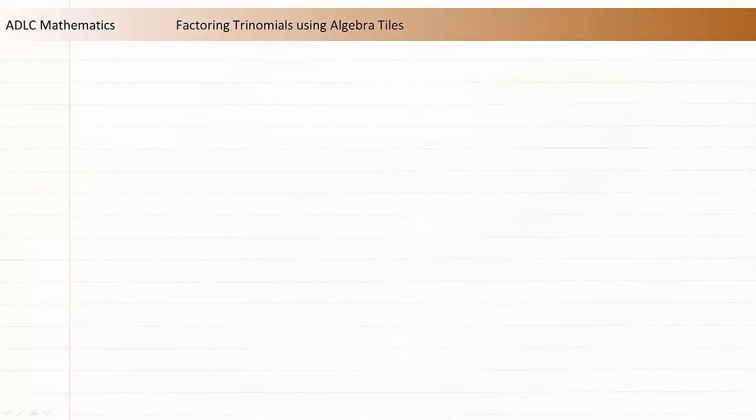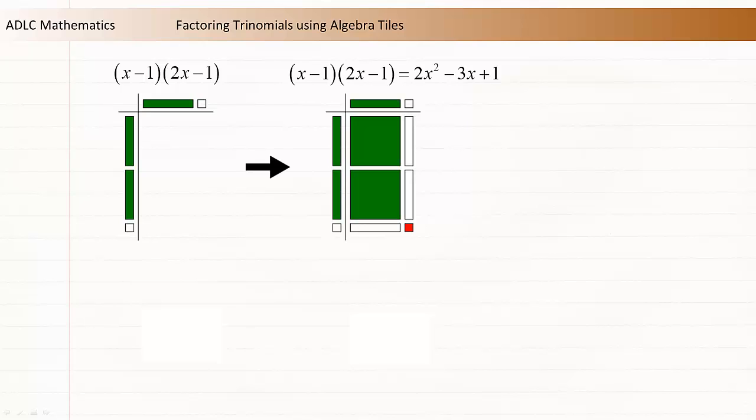In lesson 5.1, you multiplied binomials using algebra tiles. The strategy was to represent one binomial horizontally and one vertically, and then complete a rectangle of those dimensions where the inner rectangle represents the product.